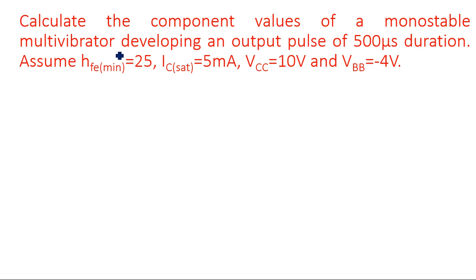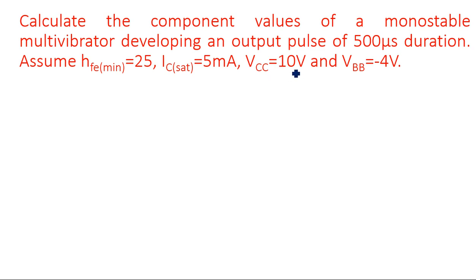A problem is given: calculate the component values of a monostable multivibrator that develops an output pulse of 500 microseconds duration. The expected gate width (time period) is 500 microseconds. The given values are: hFE minimum (beta) = 25, IC sat = 5 milliamperes, VCC = 10 volts, and VBB = minus 4 volts.